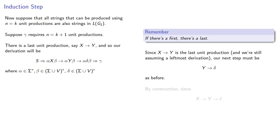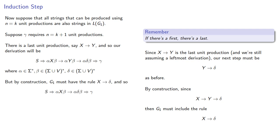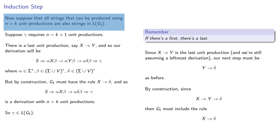By construction, since X produces Y, which produces delta, then G1 must also include the rule X produces delta. And so we can drop out that middle term. We can go from S to produce alpha, X, beta, to produce alpha, delta, beta, and then on to gamma. Since we've eliminated one of the unit productions, this is now a derivation with n equals k unit productions. And our induction assumption says that gamma is in L(G1). Consequently, anything that's in our original language is also in our new language.